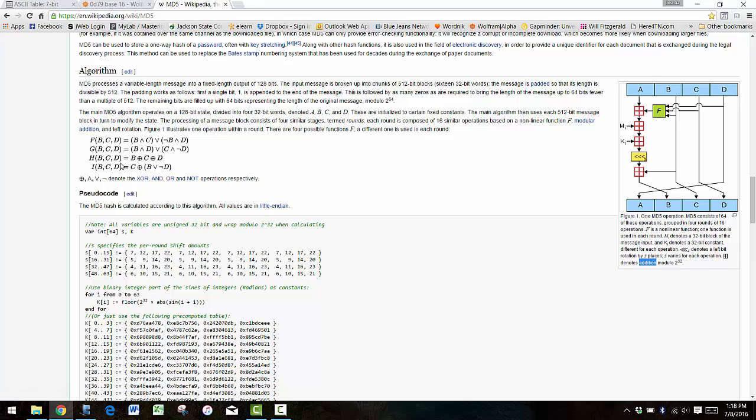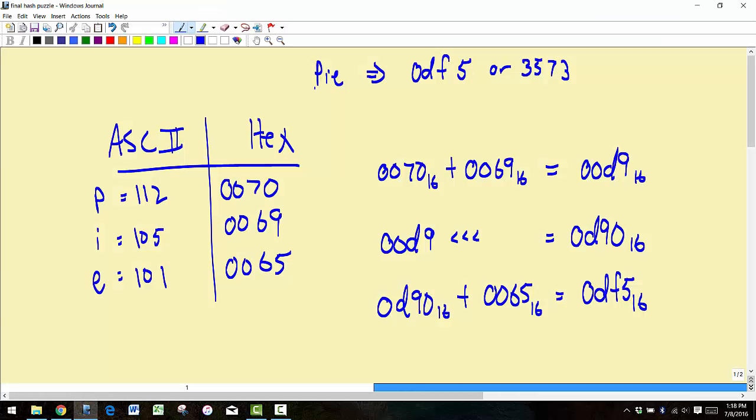We're not considering any of the operations that actually go into the MD5 and all the other algorithms SHA-1 and SHA-2 and so on. Basically what we did is we took just a very simple string of text, PIE, and we got this hash out or digest which is 0df5 or 3,573 in decimal.